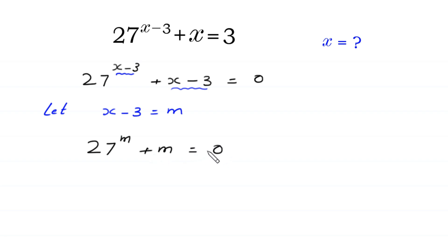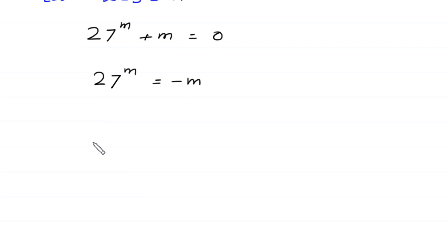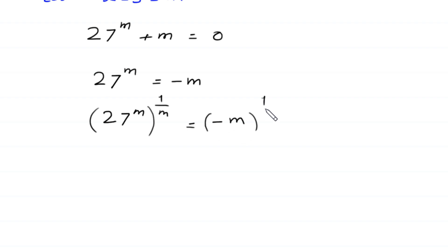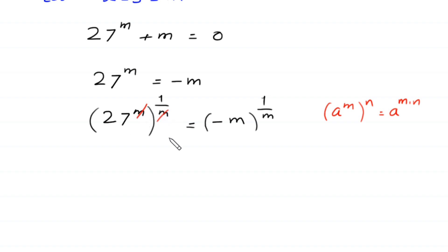Now we move this plus m to the right side: 27 to the power m is equal to negative m. From here we take the power 1 over m on both sides. 27 to the power m, whole to the power 1 over m, is equal to negative m to the power 1 over m. According to the property of exponents, a to the power m whole to the power n equals a to the power m times n. We multiply the powers m and 1 over m — the m cancels — leaving 27 is equal to negative m to the power 1 over m.